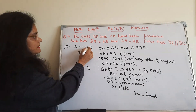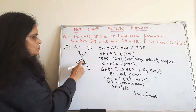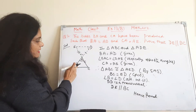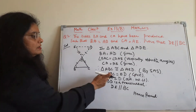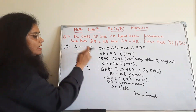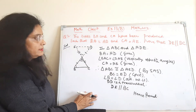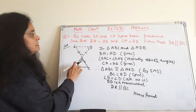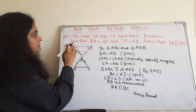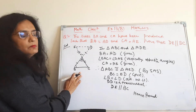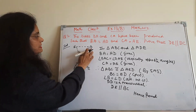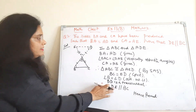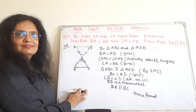Now ED and BC are two lines and BD is the transversal. So angle B and angle D are alternate interior angles, meaning angle B is equal to angle D. If these are alternate interior angles, then we know that ED is parallel to BC, or we can say that DE is parallel to BC. Hence proved. Thank you.